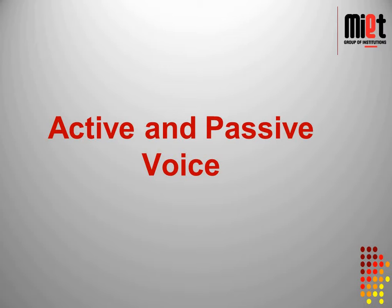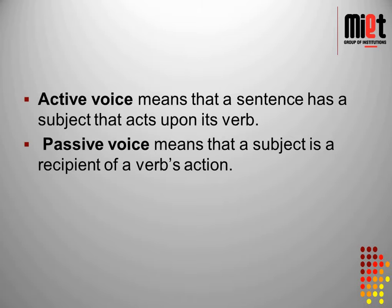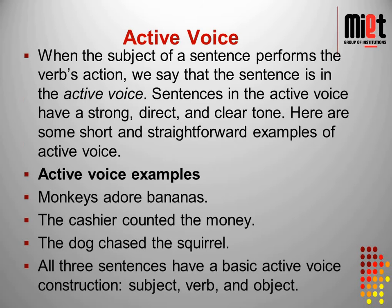If the influence of subject is over the object, the voice is called active, and if the influence of object is over the subject, the voice is called passive. Active voice means that a sentence has a subject that acts upon its verb, and passive voice means that a subject is a recipient of a verb's action.